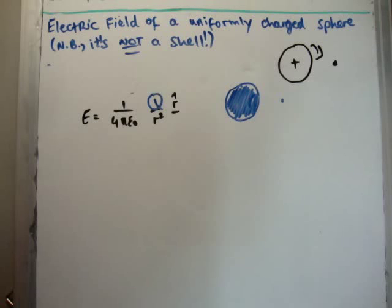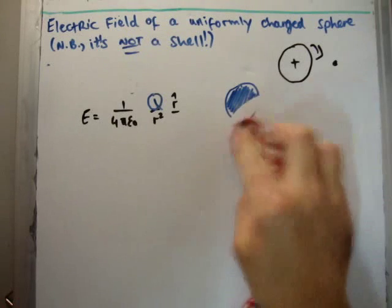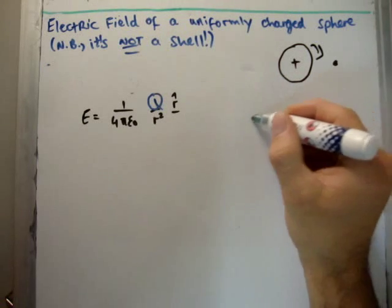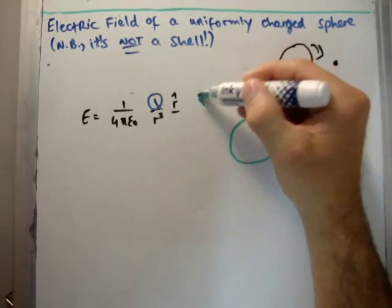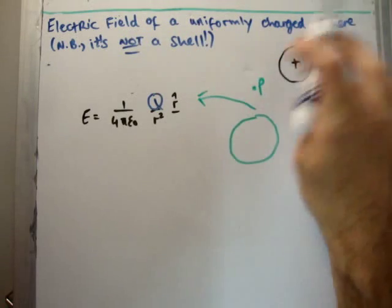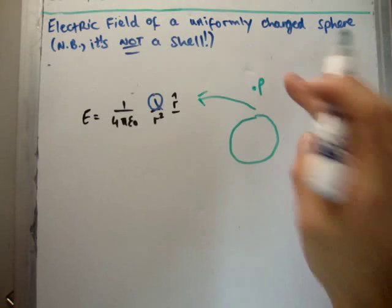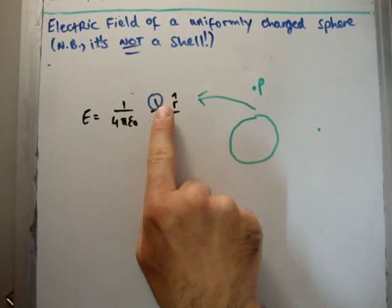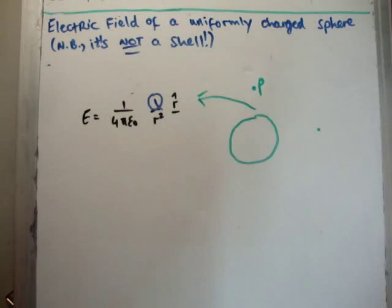Now what happens if we look inside, at a distance inside the sphere, inside the sphere itself? Well, let's say the sphere is this big. If it's this big, it has this electric field, if you measure point P outside here. And if it does, it's the same field as a point charge of charged capital Q centered at the origin.